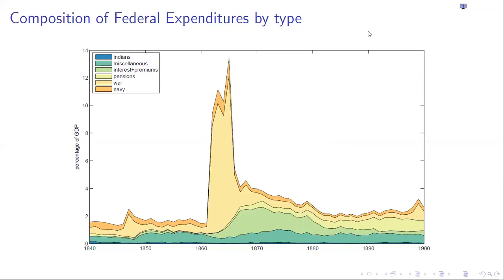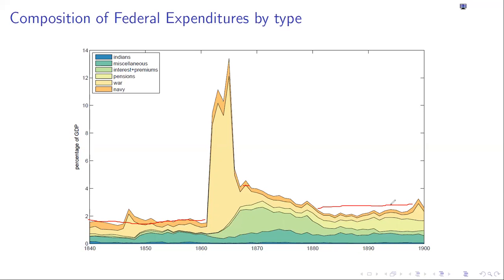Here's the Mexican War — you can see it's tiny compared to the Civil War in terms of relative magnitude. Military expenditures rise during the Civil War, then come back down, but expenditures never return to their pre-war level. They were well under 2% of GDP prior to the war; after the war, they're permanently around 3-4% of GDP. The composition also changes: here are the interest payments, and over here are the pension payments.